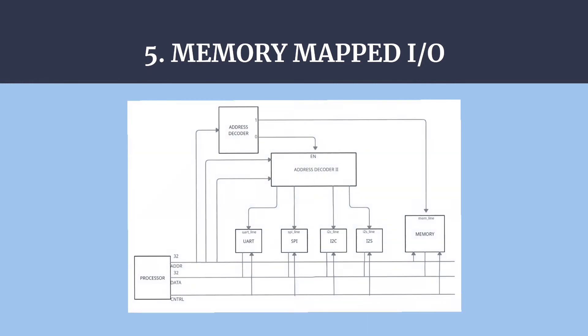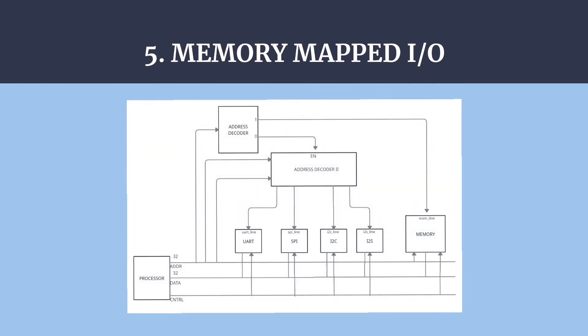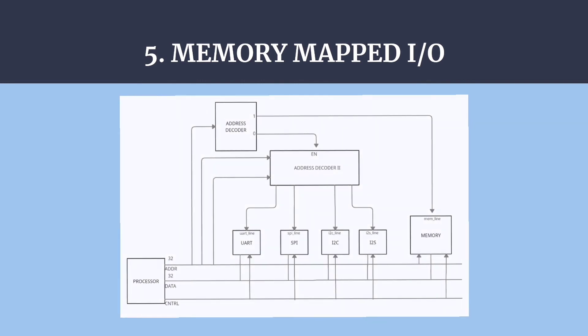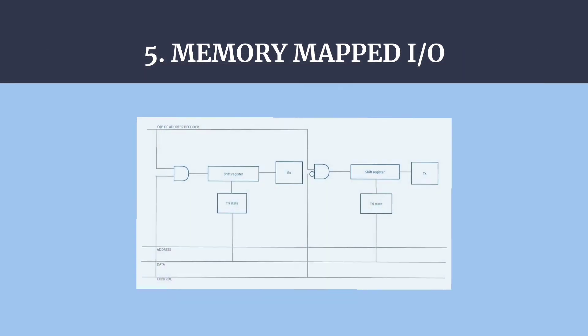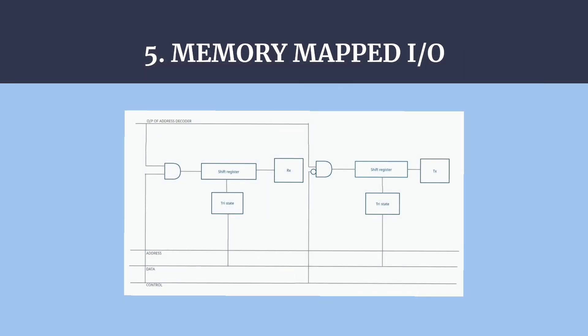After designing the peripherals, let's check out how the processor communicates with these peripherals. This is done using memory mapped IO. Processor places the address, data and control signal on the respective buses. The address decoder will enable the selected peripheral by decoding the address. This diagram shows the IO device connected to memory mapped IO.